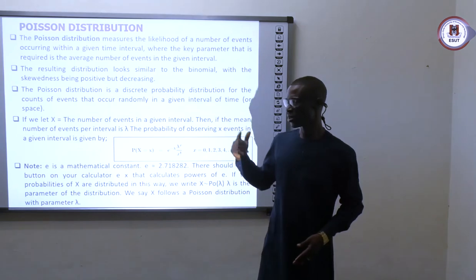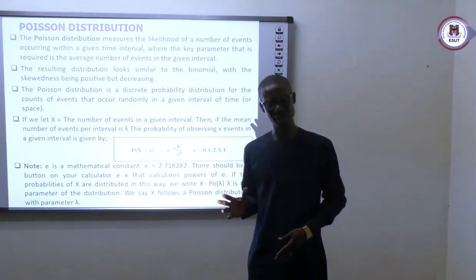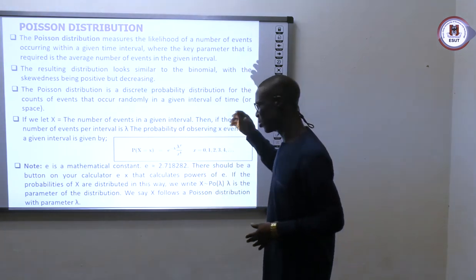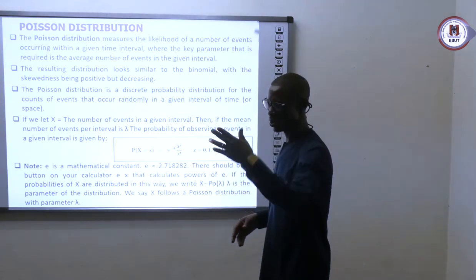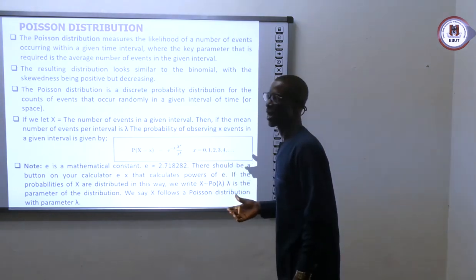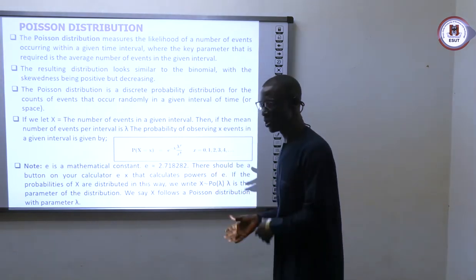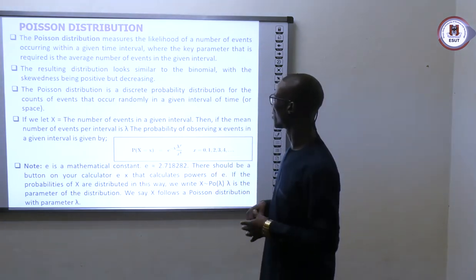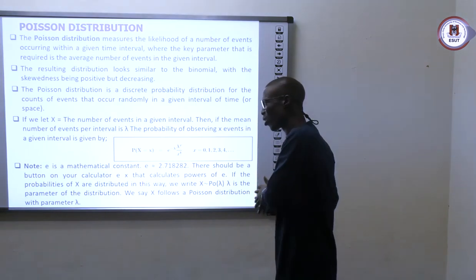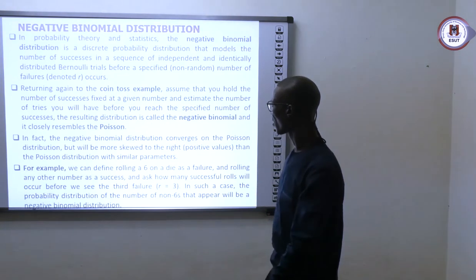Binomial is different from Poisson. Binomial only says that this event occurs but the outcome must be only two — either success or zero — so the probability of an event having success or zero is one and two. But Poisson is saying that the probability that this event not only occurs, but will occur within this specified period.